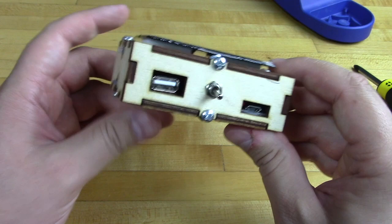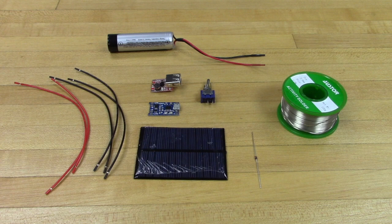Hi, this is Josh from Brown Dog Gadgets and today I'm going to show you how to make your own solar USB charger. It's pretty easy and you'll be done in about 10 minutes.